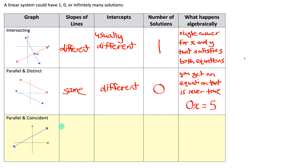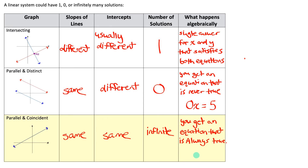The other option is that the two lines are parallel and coincident, meaning the lines are right on top of each other. The equations will have the exact same slope and the same x and y intercepts, meaning there are an infinite number of solutions. Algebraically, you'll get an equation that's true for all values of the variable — for example, 0x equals 0. You can plug in anything for x and that equation is true. That tells you the two lines are parallel and coincident, so there are infinitely many solutions.